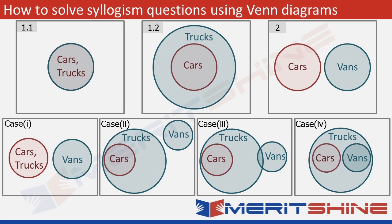So the two statements give rise to four possibilities. Case 1: cars and trucks are the same set, vans are completely separate. Case 2: cars are contained within trucks, and vans have no overlap with either. Case 3: cars are within trucks, and there is some intersection between vans and trucks, but some vans are still not trucks. Case 4: both cars and vans are contained within trucks, but cars and vans remain disjoint sets.